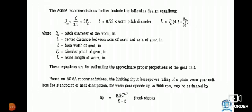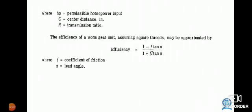For worm gear speed up to 2000 RPM may be estimated by HP = (9.5C^1.7) / (R + 5), where HP = permissible horsepower unit, C = center distance, R = transmission ratio.